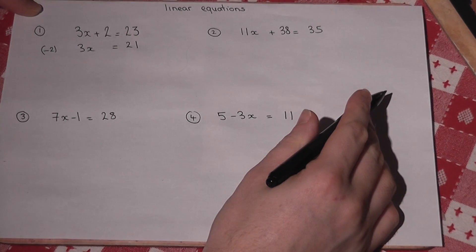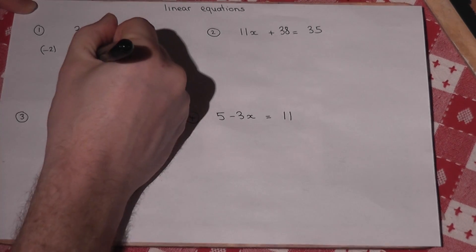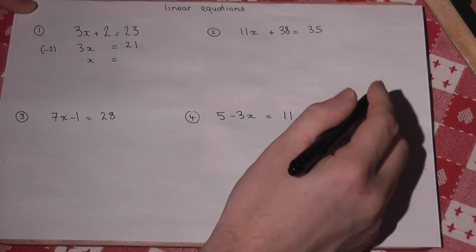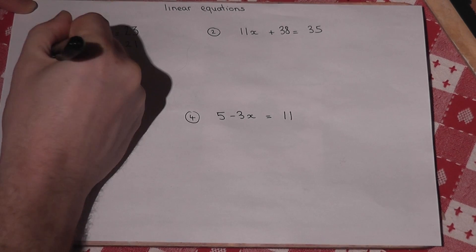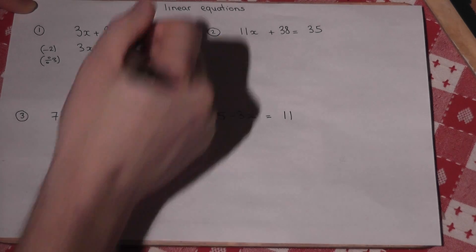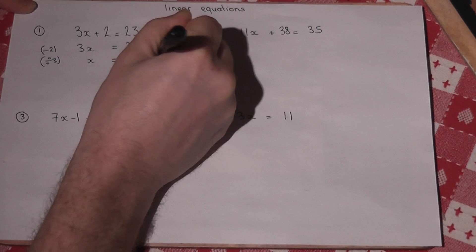So 3 times x equals 21. Then to get x equals we must divide by 3. So x will equal 21 divided by 3 which equals 7.